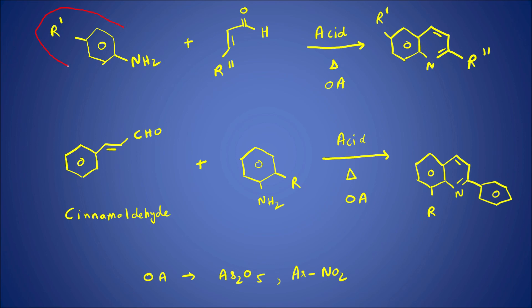This is your aniline — any aniline derivative. Here I've taken a para-derivative of aniline; it could be ortho or meta as well. We can have more derivatives — some derivative here or there. Now what happens is if we add the alpha-beta unsaturated aldehyde in the presence of an acid. This reaction requires a lot of heating; we need high temperatures to carry it out.